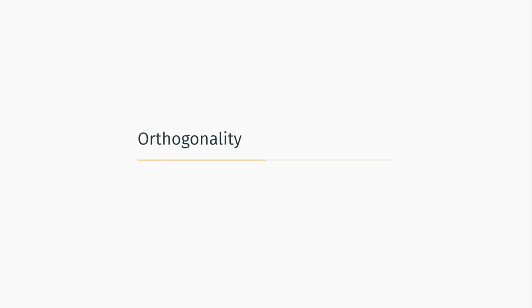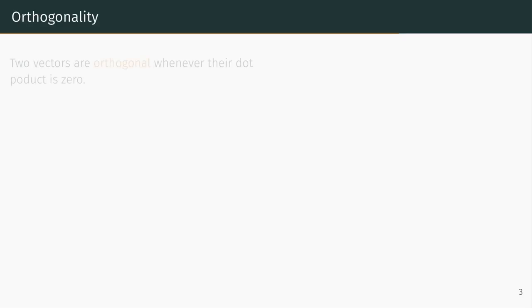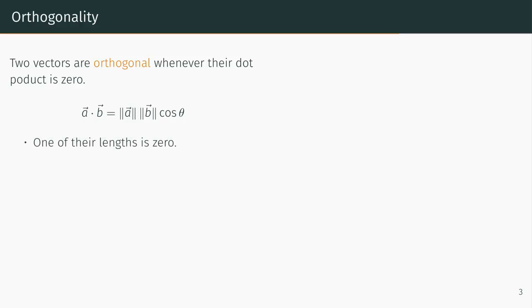Next we will discuss orthogonality. Two vectors are called orthogonal if their dot product is zero. Using the geometric definition of the dot product, we see that the vectors a and b are orthogonal if and only if one or both of their lengths are zero, or the angle between them is 90 degrees.